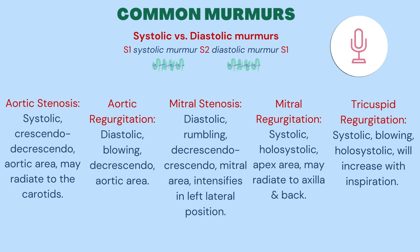Visualize the blood ejecting from the left ventricle during systole through a tight aortic valve. Aortic regurgitation is a diastolic murmur because after the blood is ejected from the left ventricle through the aortic valve in systole,